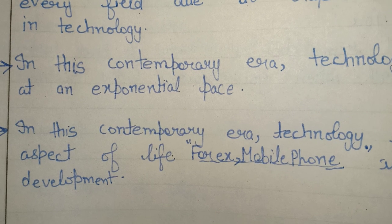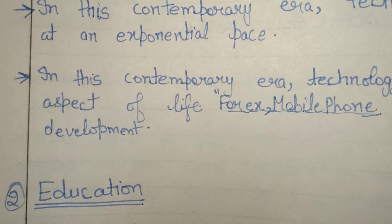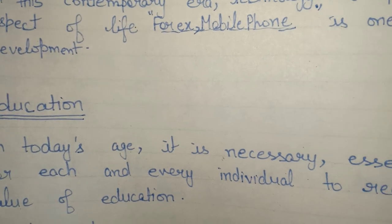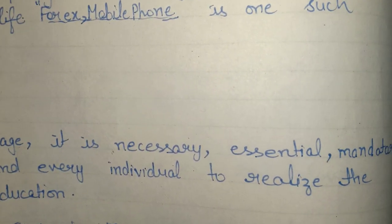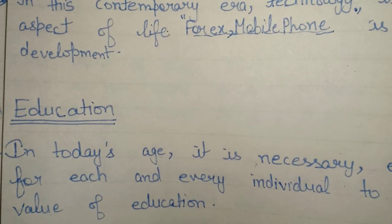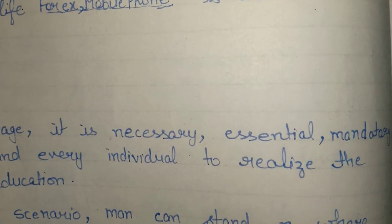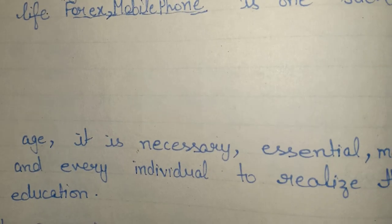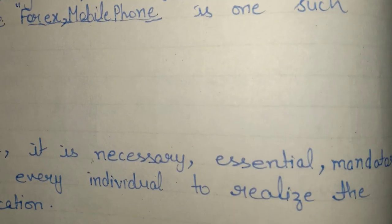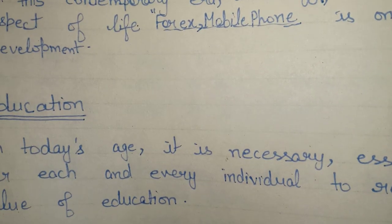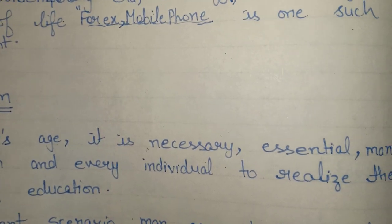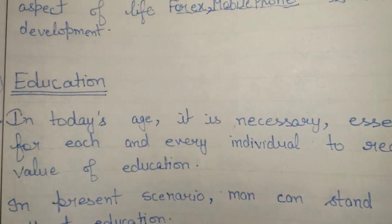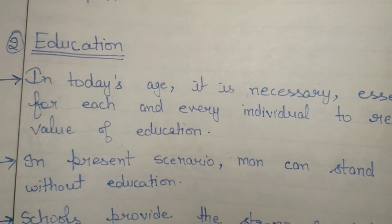The next topic is related to education. The first hook line for education is: 'In today's age, it is necessary — or essential, or mandatory — for each and every individual to realize the value of education.' You can use necessary, essential, or mandatory interchangeably here.